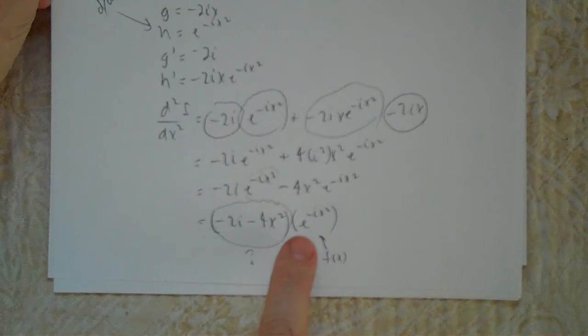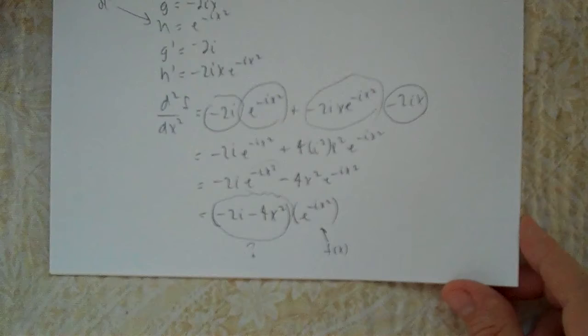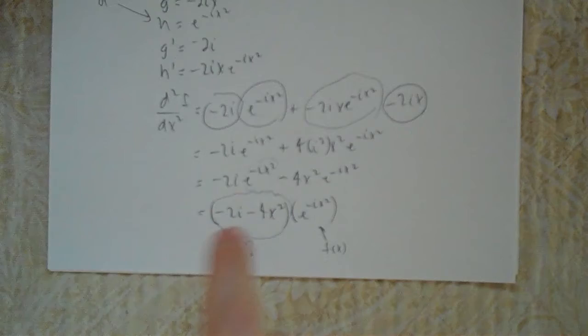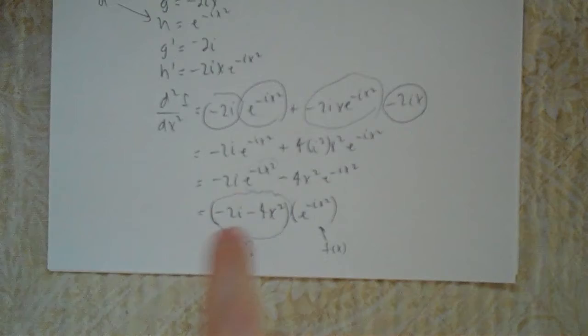So I'll leave you with this question: if e^(-ix²) is my original function, what is (minus 2i minus 4x²)? That's harder than it sounds. Those of you who know the answer - tell me: why am I asking that? Why is it interesting? Come and ask me if you're unsure.